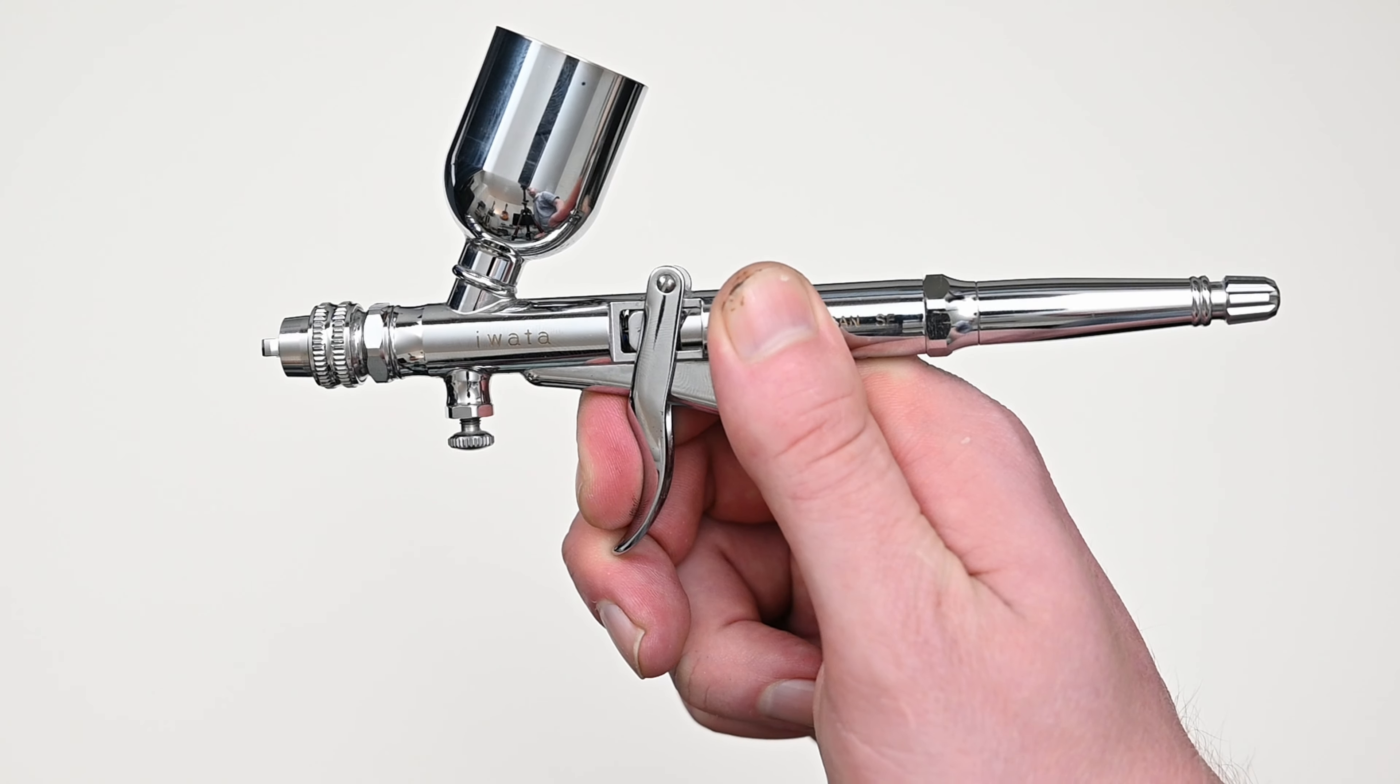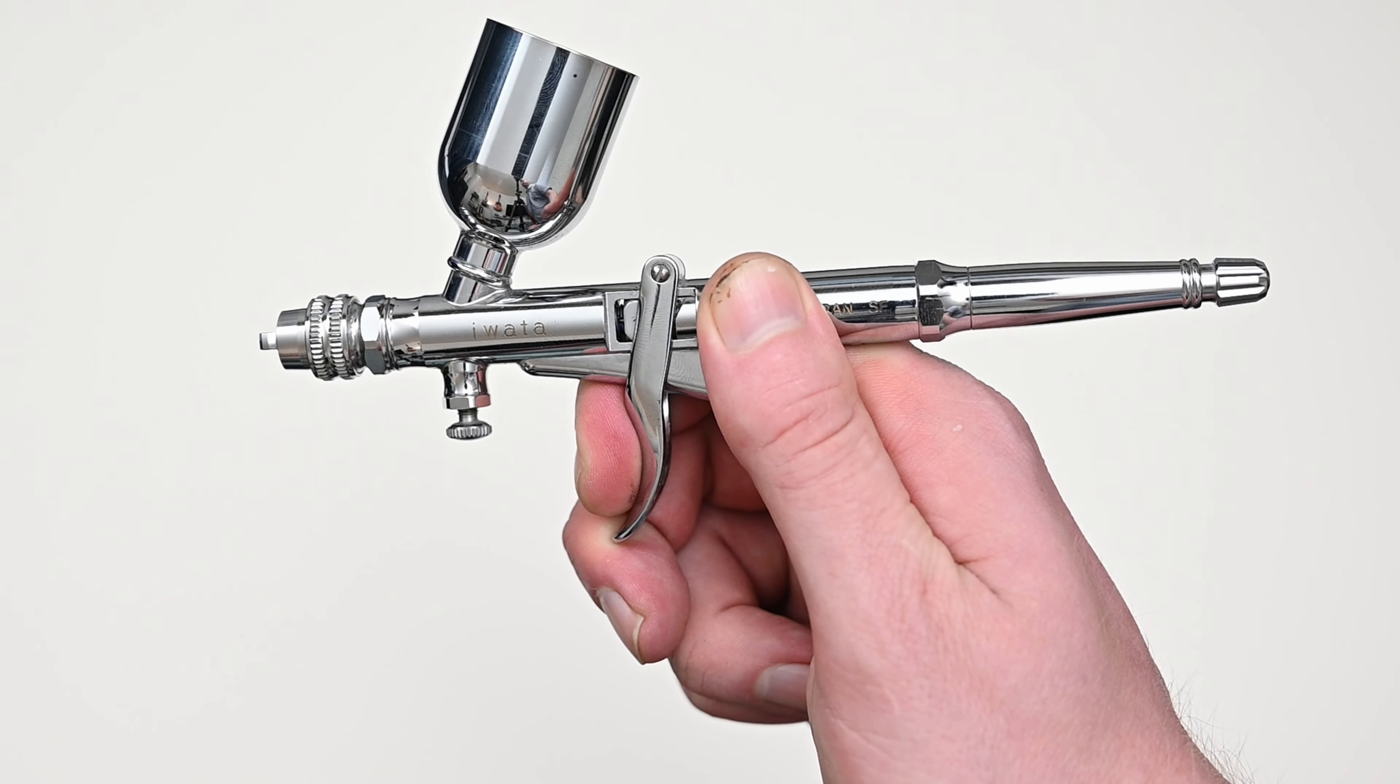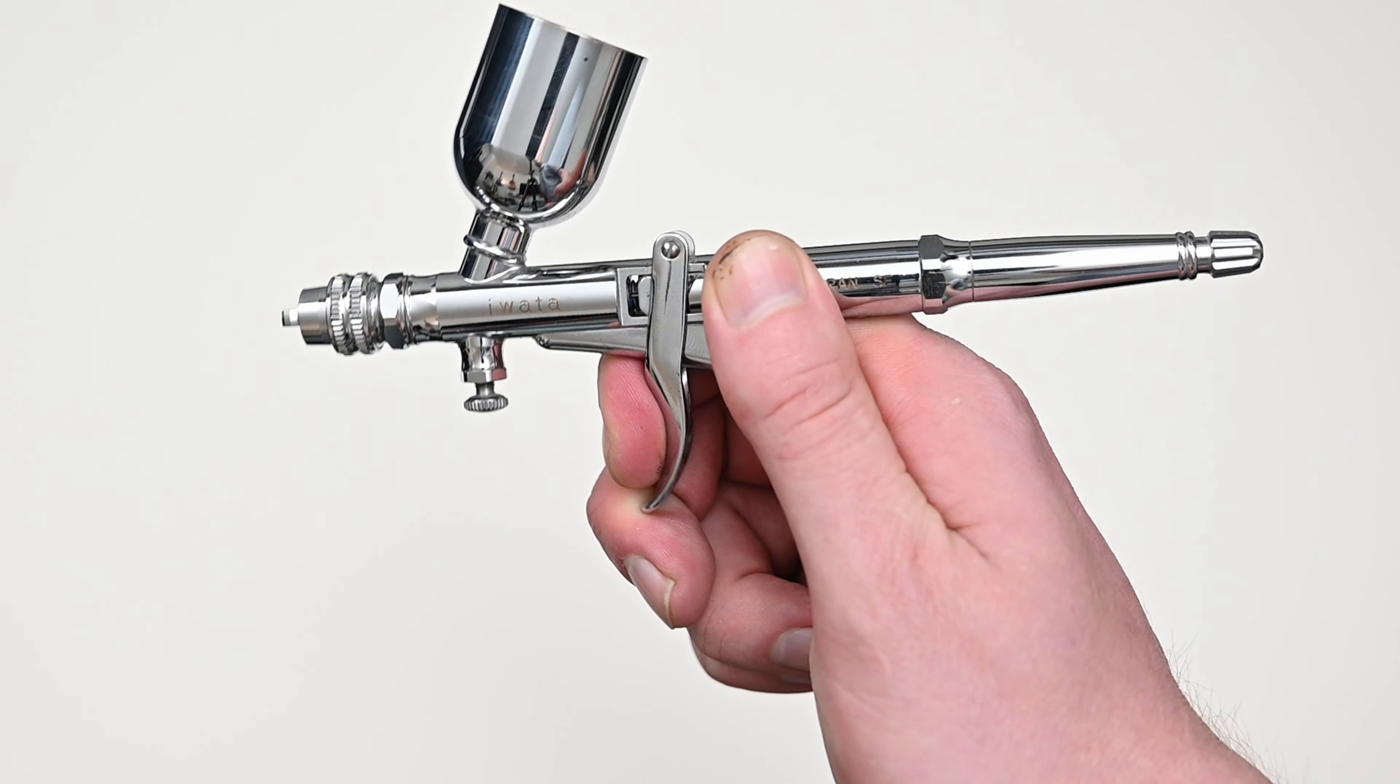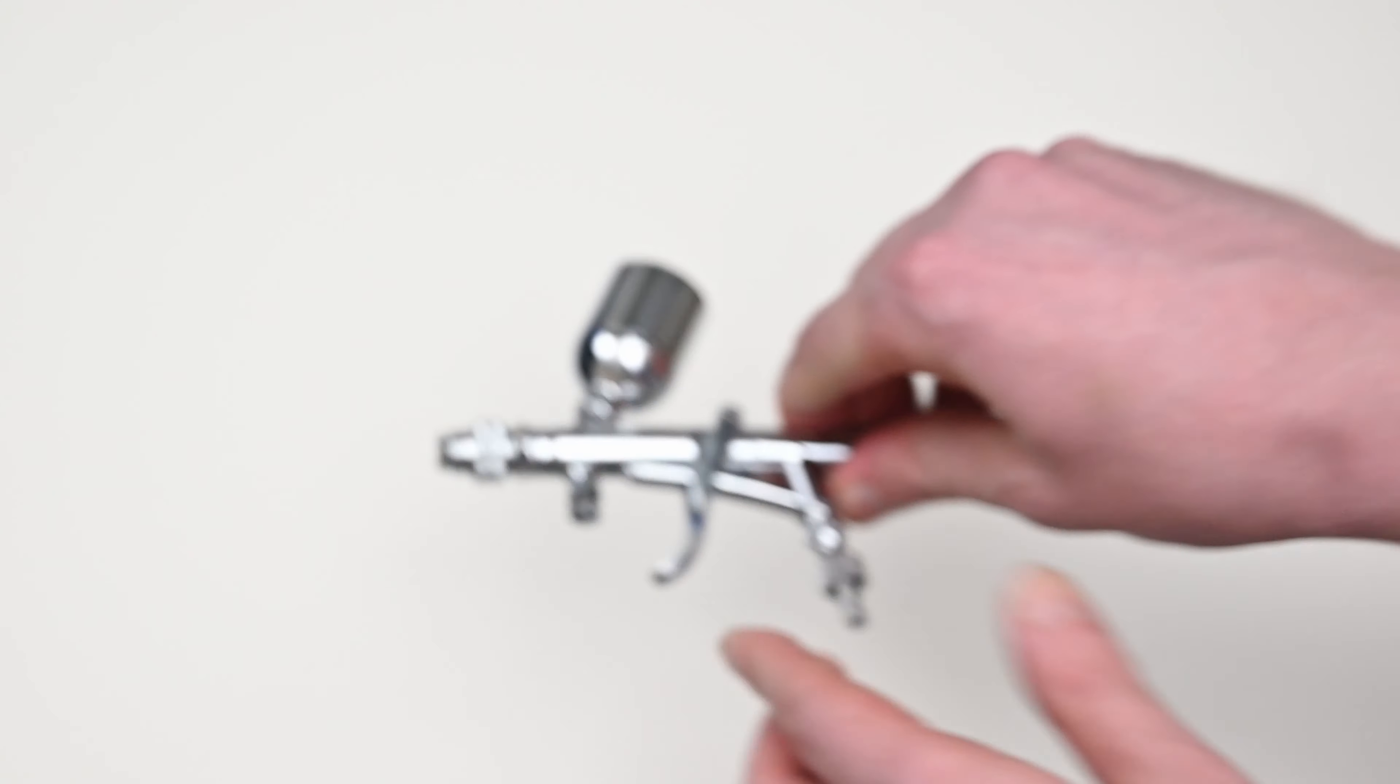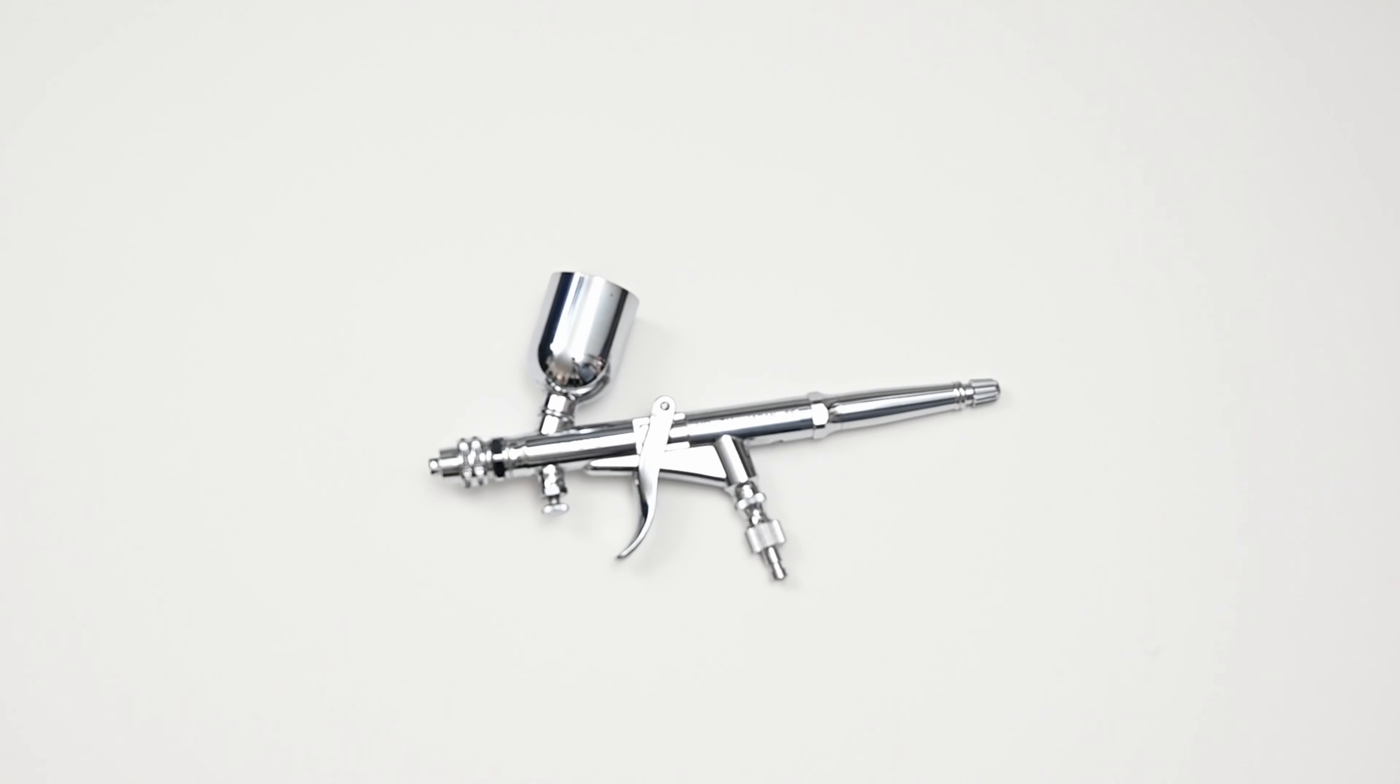And this trigger design is of course a double action. When I pull back a small amount I begin to get air and then as I pull it back farther the needle starts to retract and you start to get paint. You can control the amount of paint by how far back you pull the trigger just like any other double action airbrush.